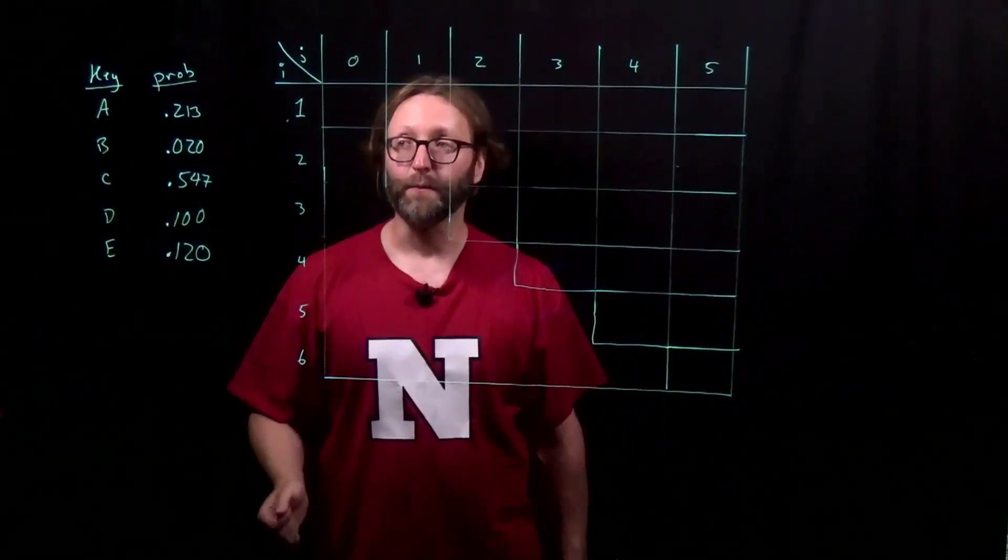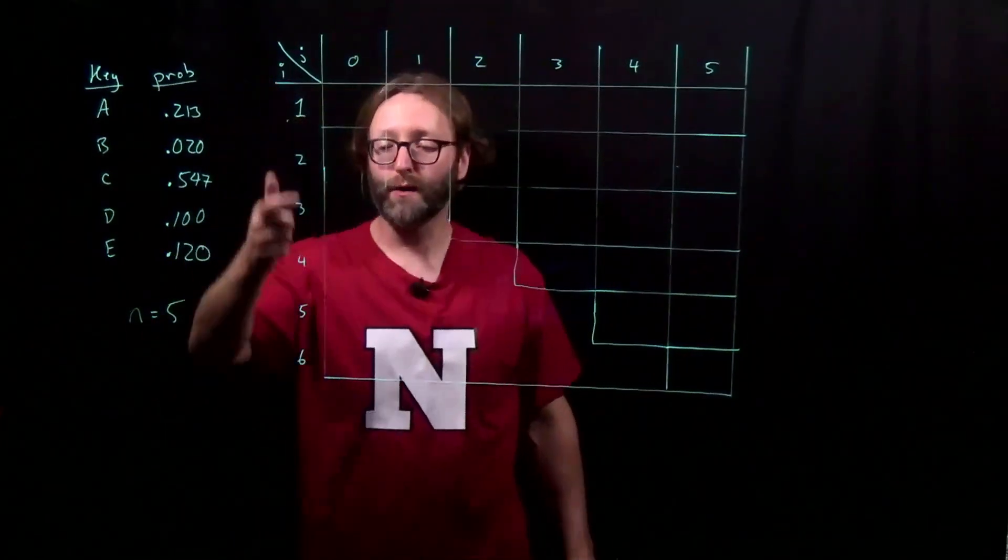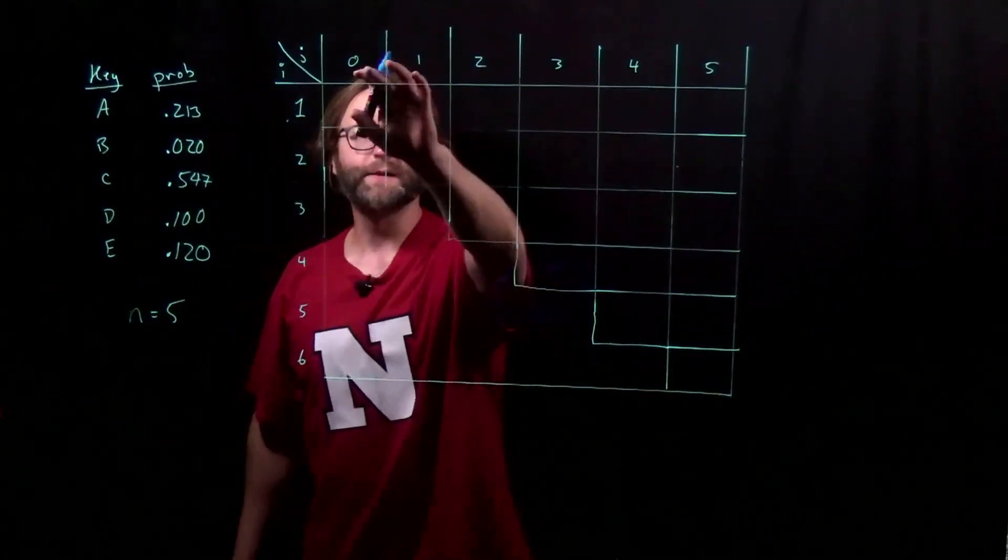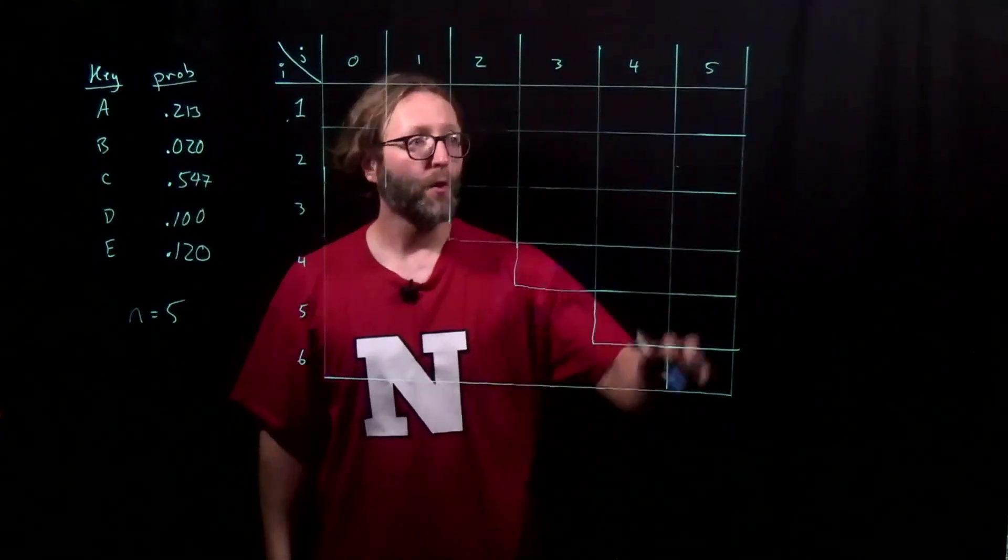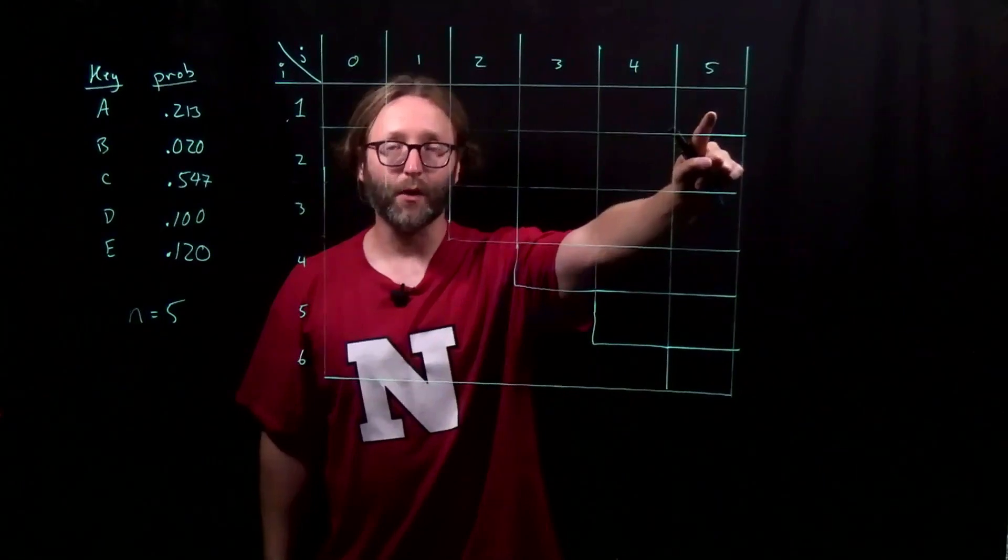I've already set up the table here. Since n is 5, I've run from 1 up to n plus 1, 6 down here, and 0 up to n over here. Remember that this is the cell that we're interested in. This gives us our optimal solution.